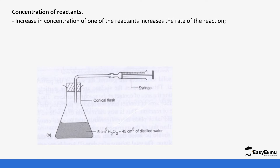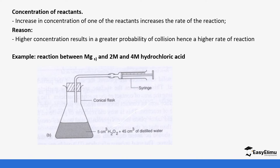Starting with concentration — concentration refers to the number of particles of the reactants in our solution. For example, if you are reacting hydrochloric acid and magnesium, the reactants are magnesium and hydrochloric acid. We can increase the amount of magnesium or the amount of hydrochloric acid. An increase in the concentration of one reactant increases the rate of reaction, because it increases the probability of successful collisions. With more particles in solution, there are more successful collisions, which increases the rate of reaction.